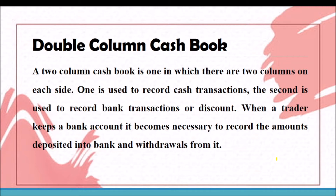When a trader keeps a bank account, it becomes necessary to record amounts deposited into the bank and withdrawals from the bank. This brings in the concept of a contra entry. Normally we record one transaction on only one side of the cash book. But transactions like cash deposited into bank or cash withdrawn from bank require recording on both sides — debit side and credit side. This is called a contra entry: one transaction is recorded on different sides of the same account.